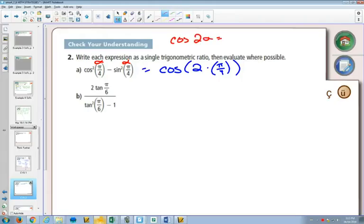cos(2α) = cos²(α) - sin²(α). That's one of our formulas.